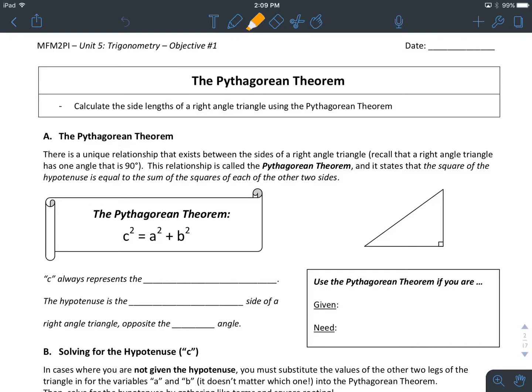Hello, this is MFM 2PI, our trigonometry unit, and this is the first lesson, the Pythagorean Theorem. The objective of this lesson is to learn how to calculate the side lengths of a right-angle triangle using the Pythagorean Theorem. Let's get to it.